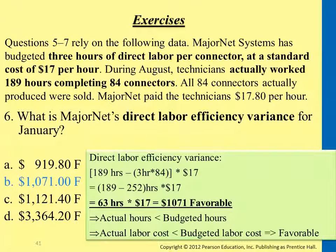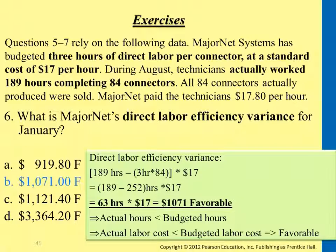So the 189 actual hours was given to you. And then this part here — originally this is the standard hours. From the problem it tells you that originally each connector, they allow workers three hours to produce it. So this was the original rate and this was the actual output. So supposedly they could spend this many hours.